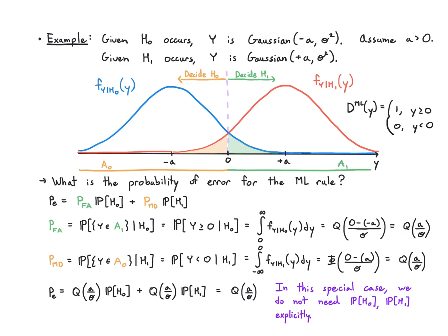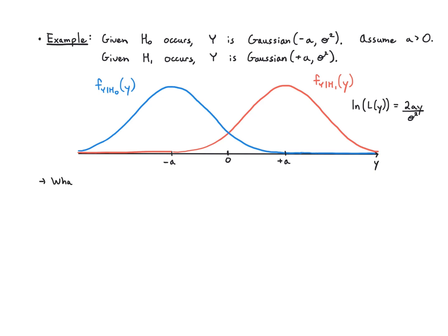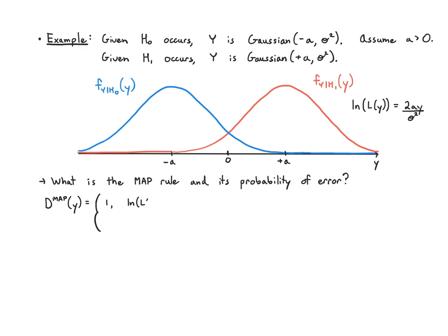Basically, the total area where we're making an error is governed by how big a is relative to the standard deviation. If the mean is shifted very far out relative to the standard deviation, then you expect to make very few errors. To wrap up, we'll work out the MAP rule and the probability of error, which is exactly the same thing except now we have a threshold that depends on the relative hypothesis probabilities.